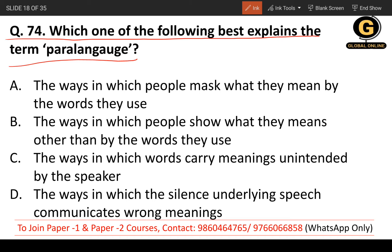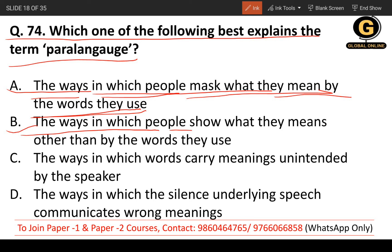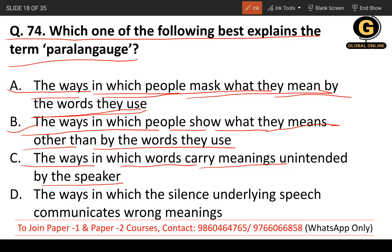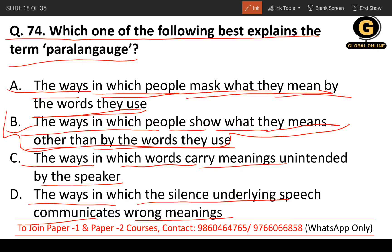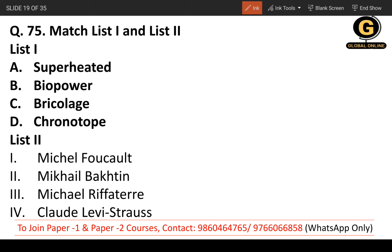Question 74: Which one of the following best explains the term 'para-language'? Options include: the ways people mask what they mean by the words they use; the ways people show what they mean other than by the words they use; the ways words carry meaning unintended by the speaker; and the ways silence communicates wrong meanings. The correct answer is B — the ways in which people show what they mean other than by the words they use.